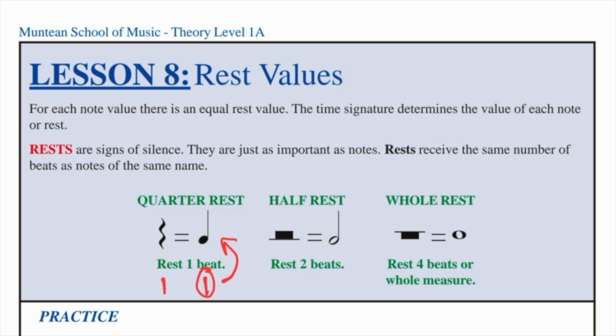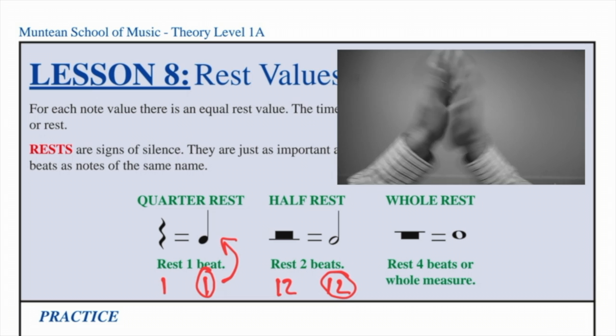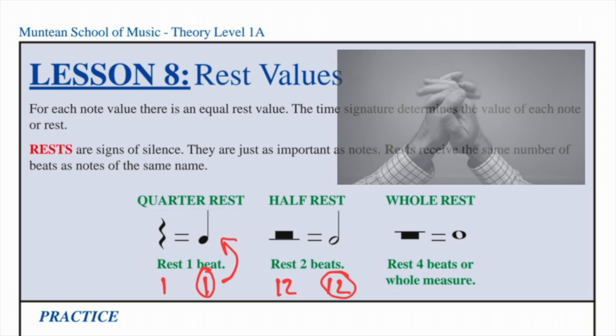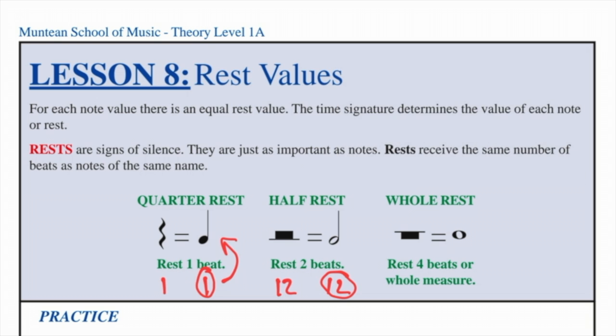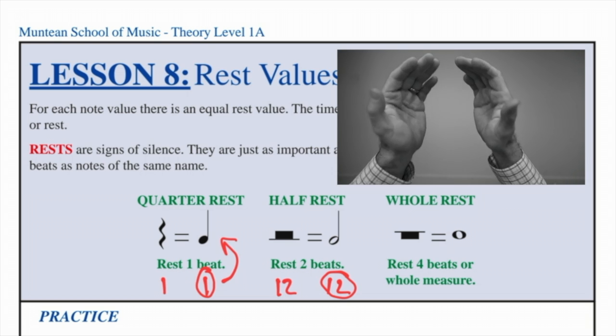For half rests, the same rule applies. Half note receives two beats, one, two. For a half rest, it would be one, two as well. But a half note receives the circle. So this is how we would clap a half note: half note. This is how we would demonstrate a half rest: half rest.